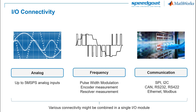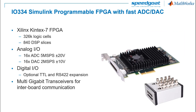In some cases, one single IO module can combine multiple functionality. For example, the IO334 is an FPGA-based IO module optimized for use with HDL Coder. It includes a combination of analog and frequency IO channels, and can also be connected directly with other IO modules with fast multi-gigabit transceivers.